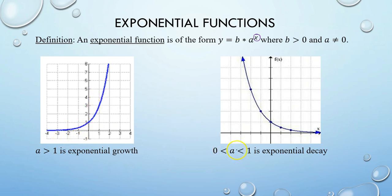When a is between 0 and 1, that means we have exponential decay, which is a purely decreasing function.